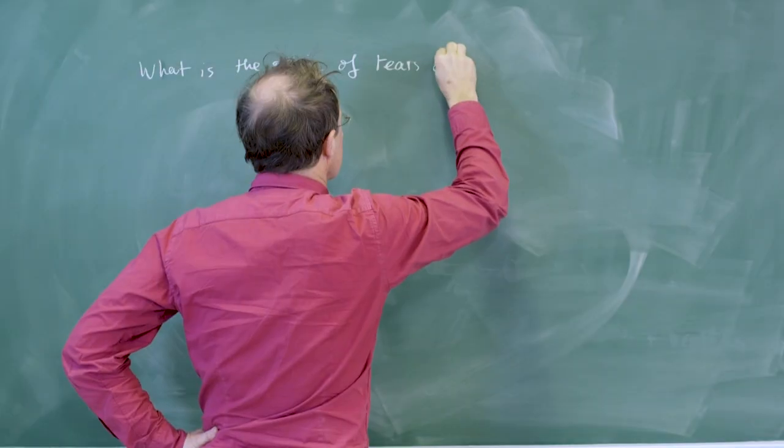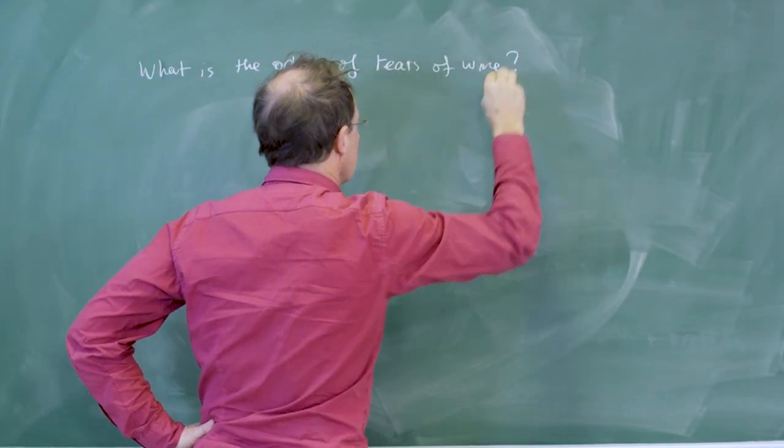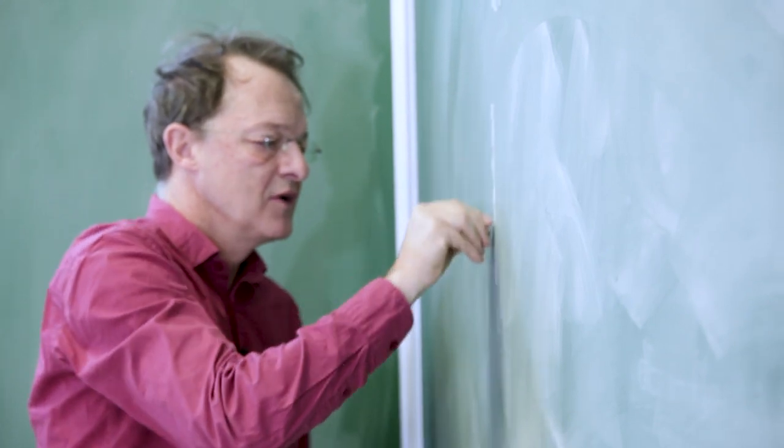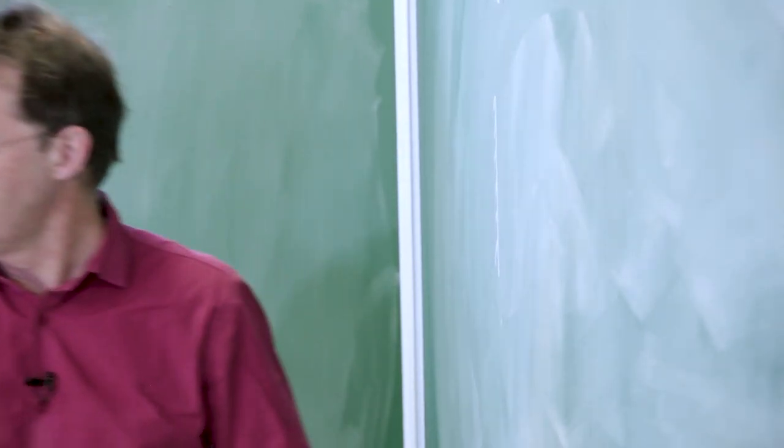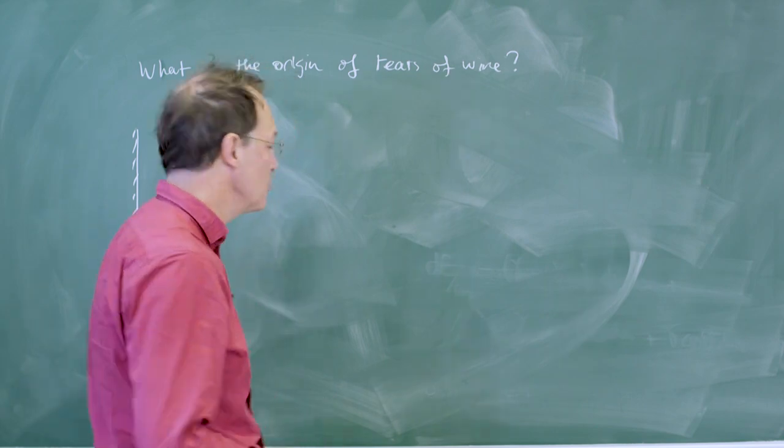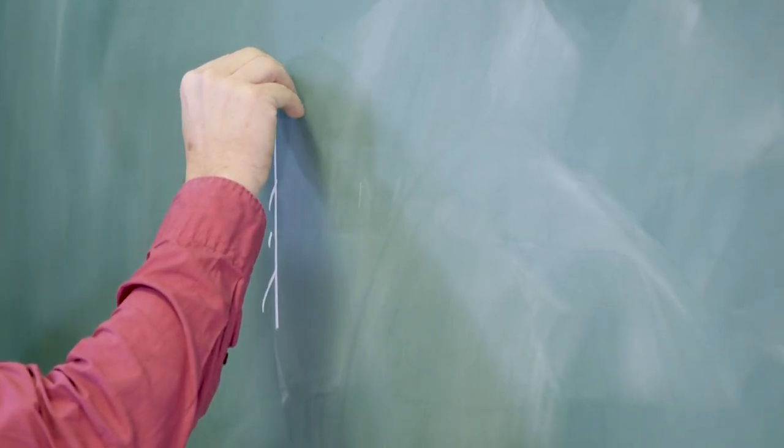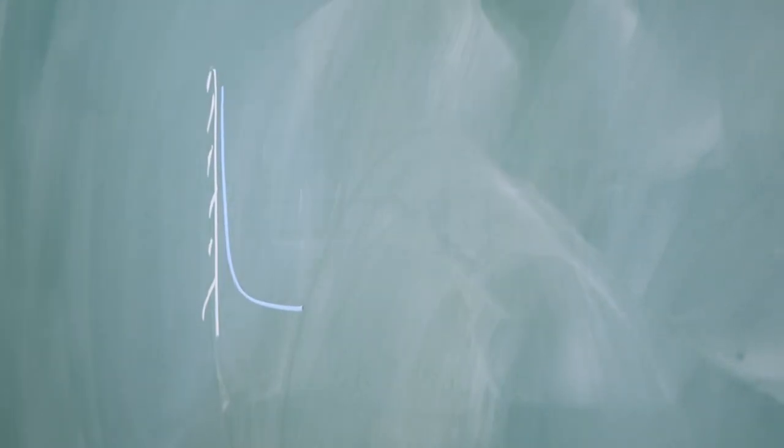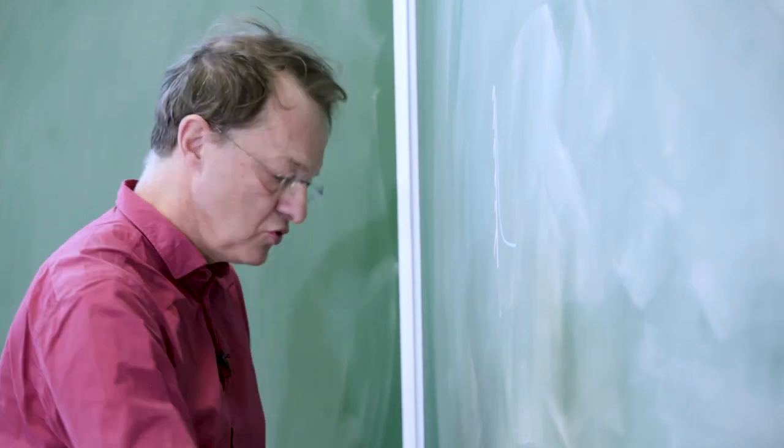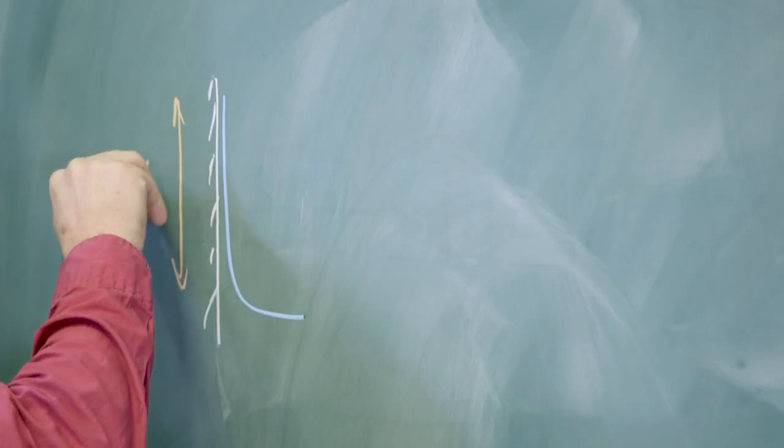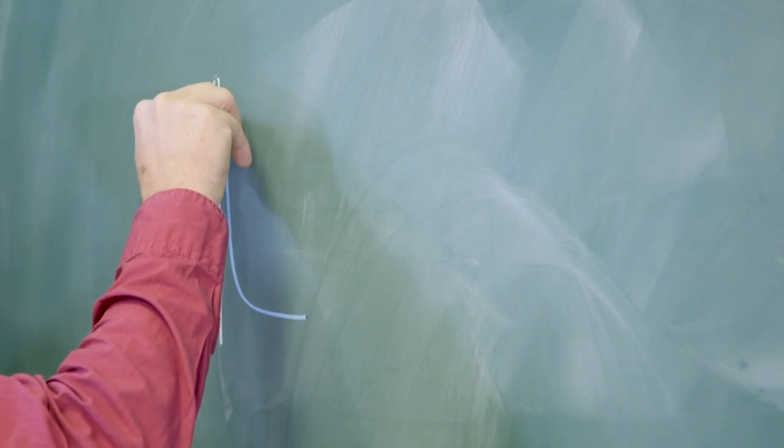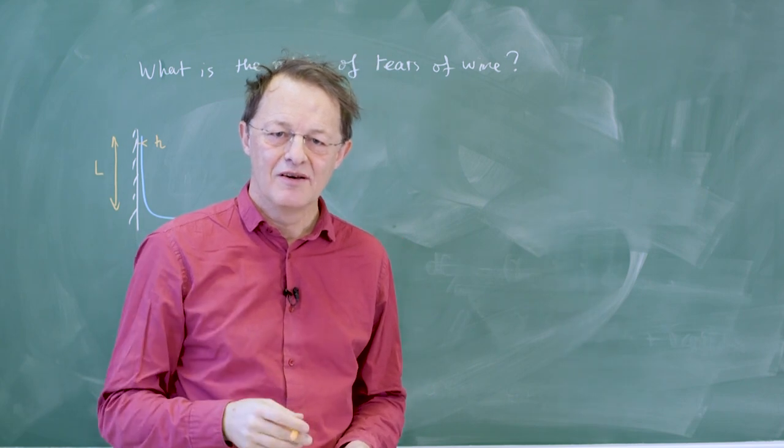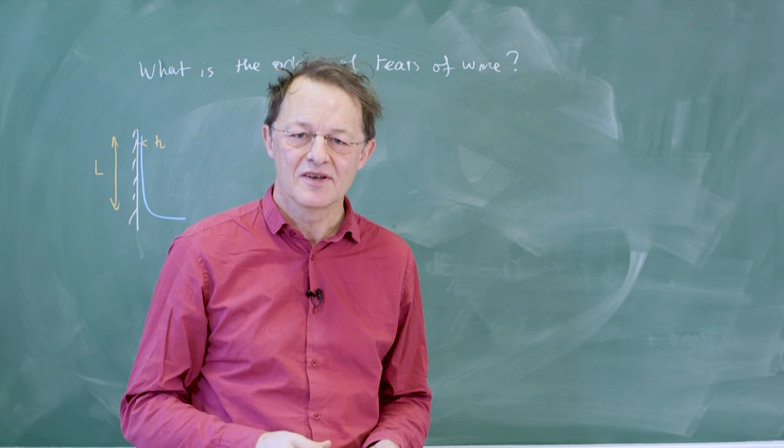What is the origin of the tears of wine? As always, we start with a sketch. We have the wall of the glass here and we swirl the beverage against this wall so that we get a film which is contacting the rest of the liquid. So the typical height here is L, the thickness of the film is H and we must understand how this liquid can resist gravity.